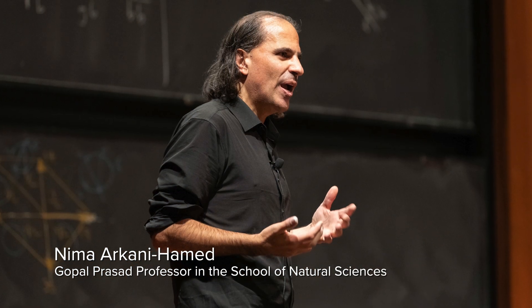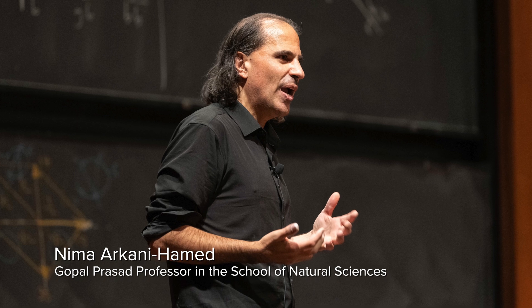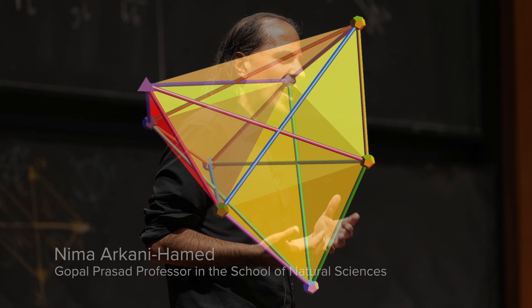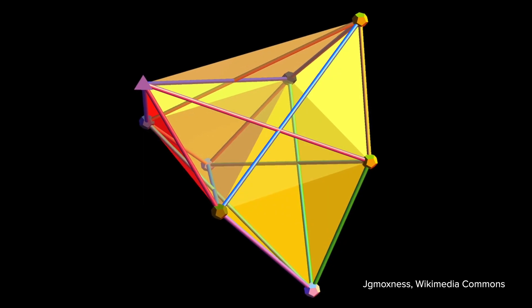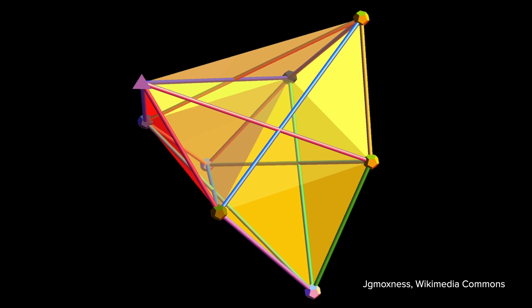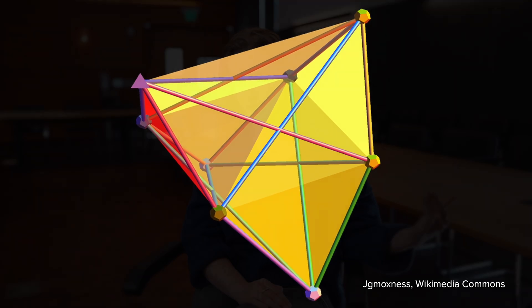Nima and, at the time, his student Yara Trinka, they discovered an object called the amplituhedron, which comes from the positive Grassmannian, and it seems to encode a lot of the secrets of particle physics.